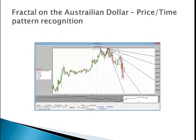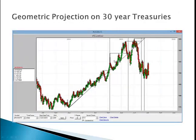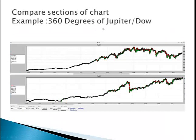The fractal module can detect price-time patterns that have repeated in the past, and they often go on to match the fractal in the future. The geometric projection here is shown on the 30-year treasury, and you can see that it corresponded to some turning points. You can also compare sections of chart — here's an example of 360 degrees of Jupiter on the Dow.